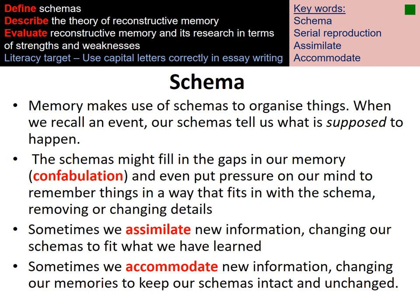We might assimilate information, which is where we change our schema to fit what we've learned — for example, changing the belief that all birds are brown. This typically happens when something we witnessed was really obviously not what we'd expect, like seeing a bright pink bird for the first time. The opposite is accommodation, which happens more regularly — this is where you change your memory to keep your schema intact. So instead of remembering the bird was pink, you recall it as green or brown because that's what your schema says.